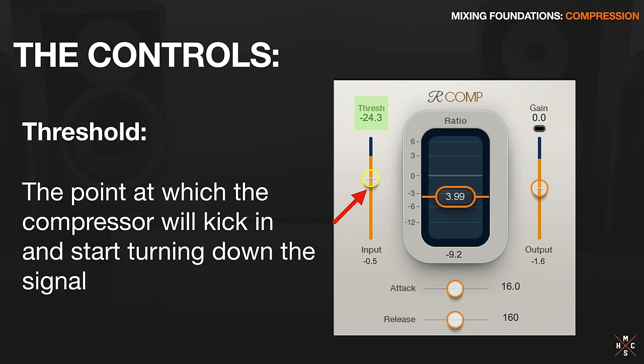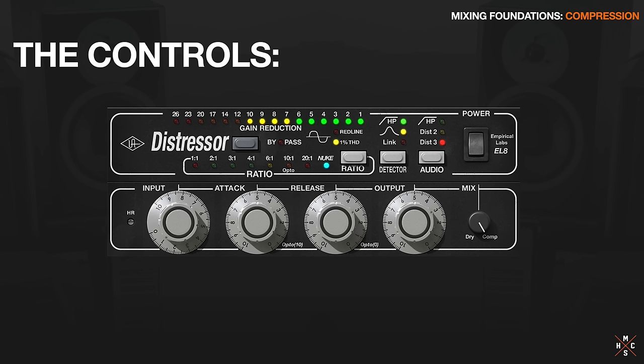Before we go deeper, let's talk about all the controls on a compressor. First, we have the threshold - the point at which the compressor will kick in and start turning down the signal. In some compressors like this one on the screen, you control the threshold. In others, the threshold is hardwired at a certain level, and you control the input level going into the unit. This compressor is a Distressor model - there is no threshold control, it's just a hard set threshold. So if you want to push the signal past the threshold, you turn up the input knob, cross that threshold more, and thus compress more. Whether it's an input knob or a threshold knob, it essentially accomplishes the same thing.